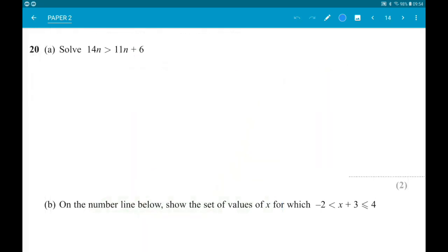Number 20: Solve 14N is greater than 11N add 6. We want N on its own. Subtract 11N from both sides, leaving 3N is greater than 6. Divide both sides by 3, we get N greater than 2.